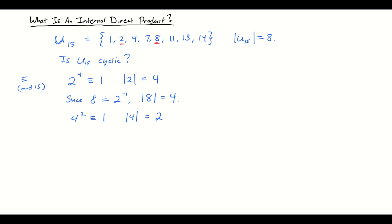Well 4 is 2 squared and the order of 2 is 4. So we might anticipate that the order of 4 is half of that and in fact we can check that 4 squared is congruent to 1. So let's try a different element. What about 7? So 7 squared is 49 which is congruent to 4.